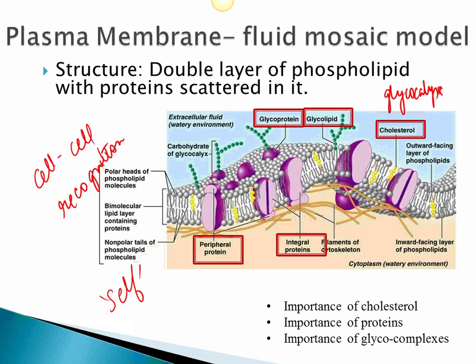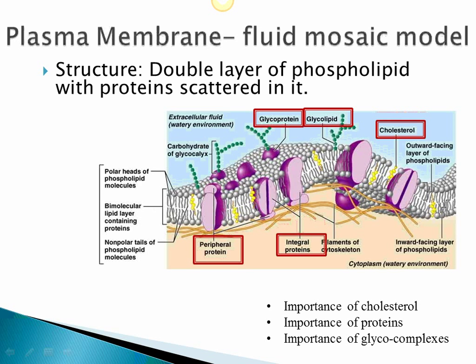When someone has a transplant, anti-rejection medications suppress the immune response. The glycocalyx markers identify the transplanted tissue as foreign, calling upon macrophages and cytotoxic T lymphocytes to attack it. Immunosuppressant drugs prevent the macrophages and white blood cells from doing their job, so rejection doesn't occur. But as a result, these people are more prone to infections because the immune response has been dampened.